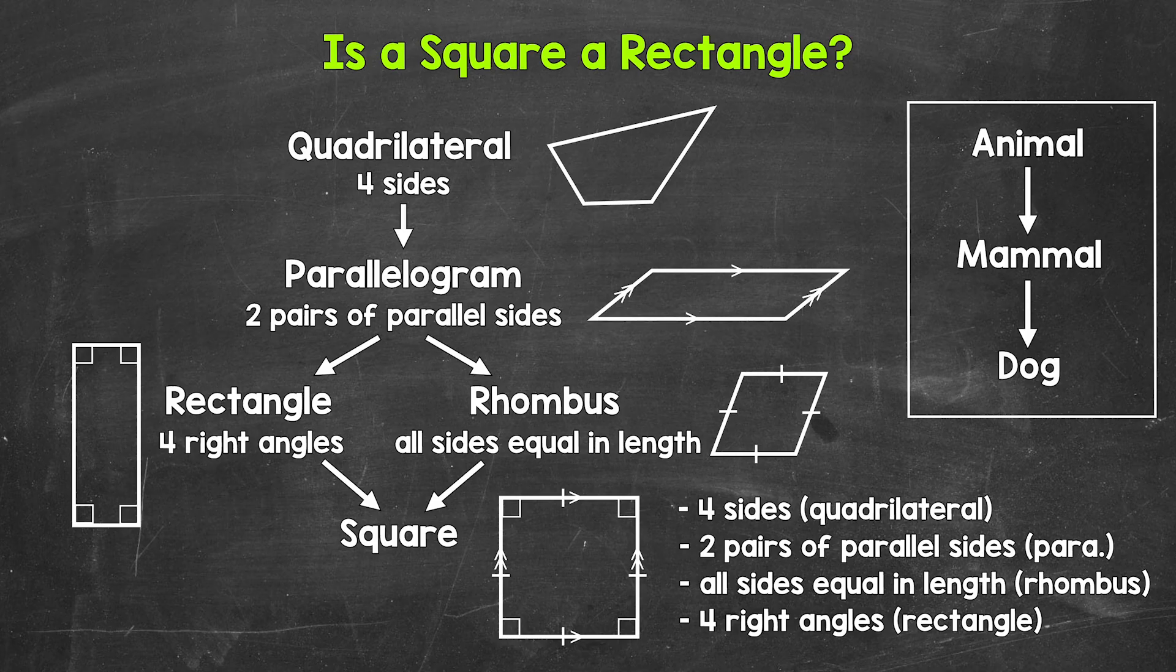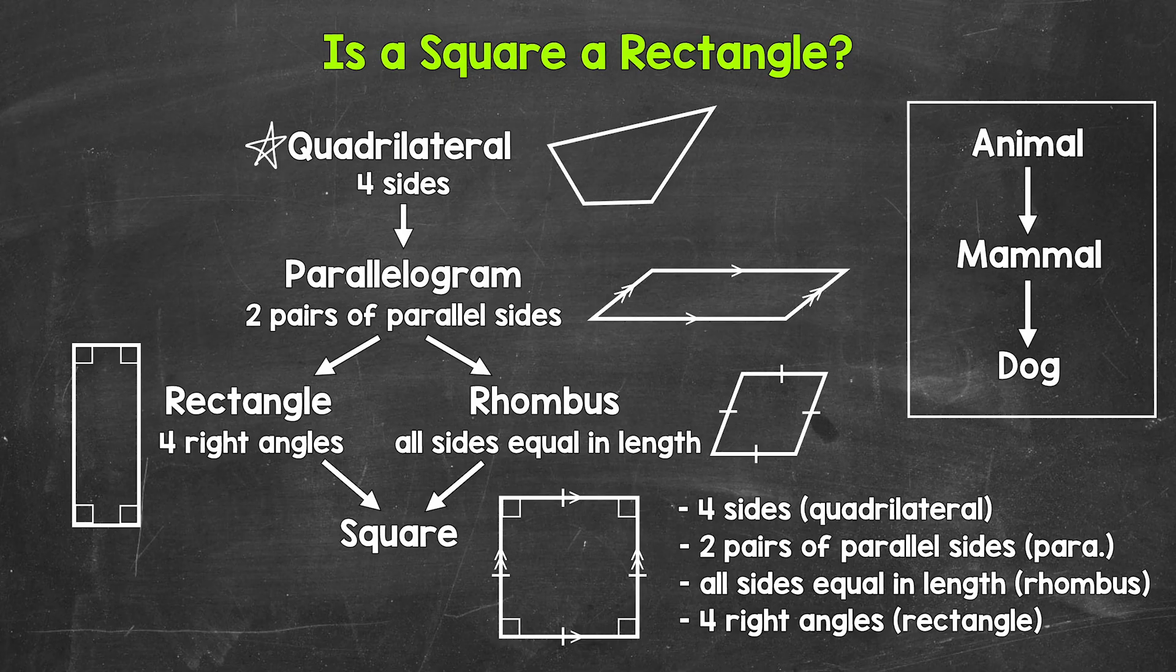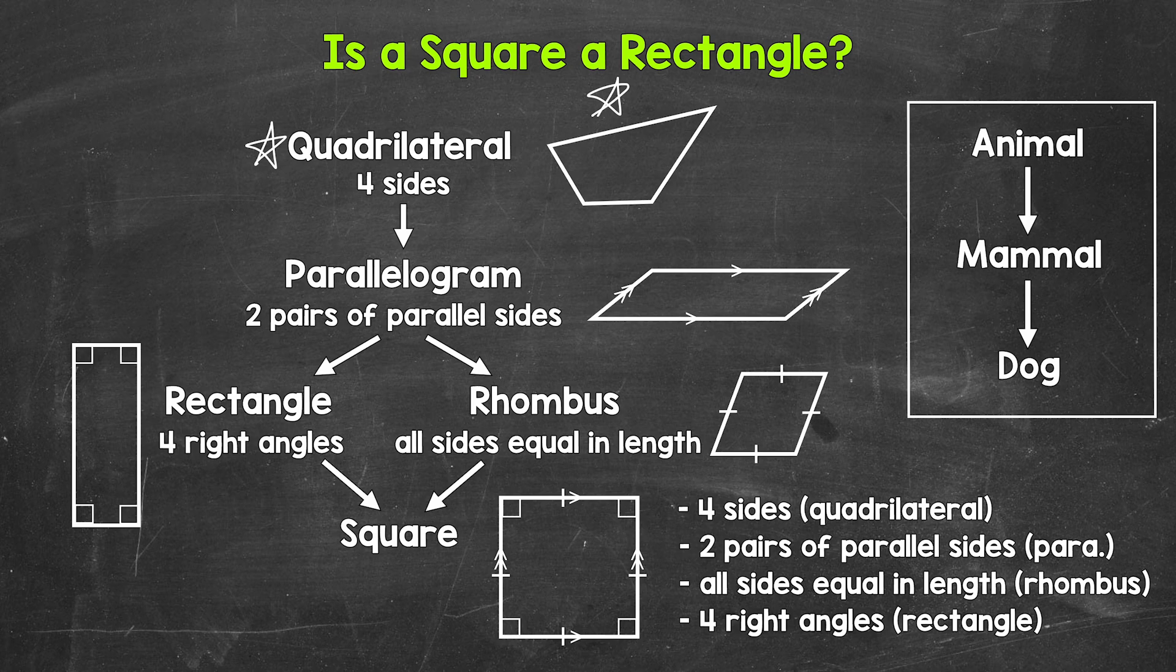Now, before we talk about squares and rectangles, we need to back all the way up to quadrilaterals, which are just four-sided polygons. Quadrilaterals have four sides, four angles, and four vertices. Here's an example of a quadrilateral right here. Four sides, four angles, and four vertices. Remember, vertices are just the corners. So this is not very specific at all. Quadrilaterals are just figures with four sides. So is a square a quadrilateral? Yes, squares have four sides.